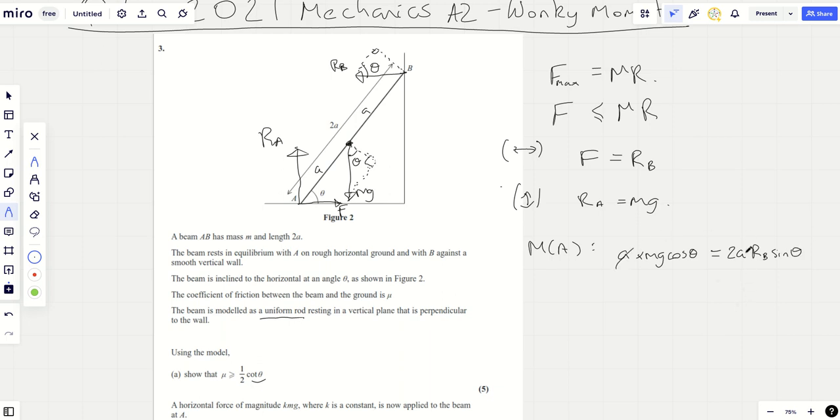And so anyway, that equals 2A RB sine theta. Cross out the A, simplify it a bit and you can see that RB is going to be equal to MG cos theta divided by sine theta is cot theta. And then you're going to have to divide it by 2. Okay.